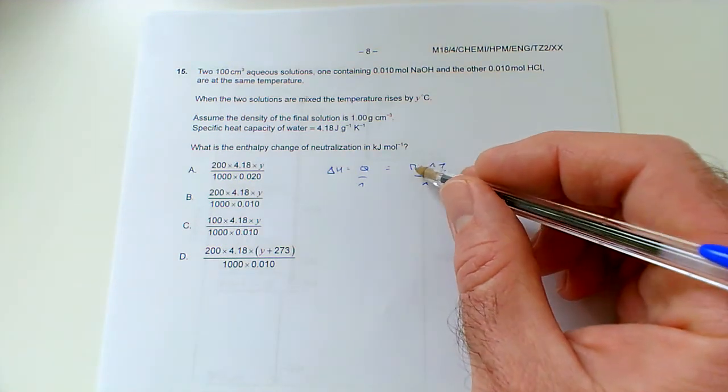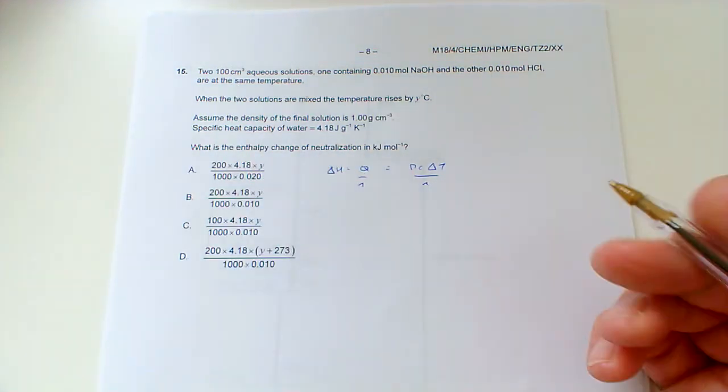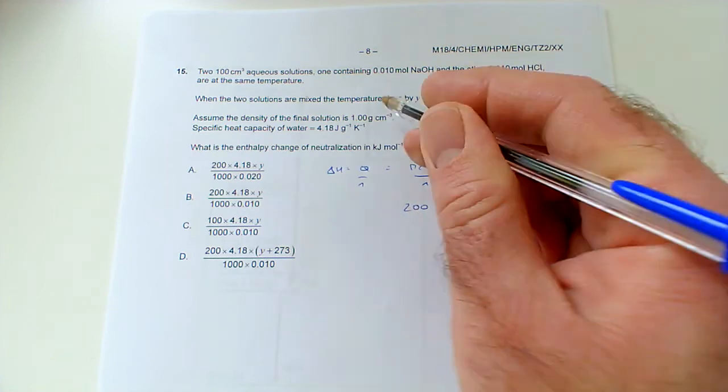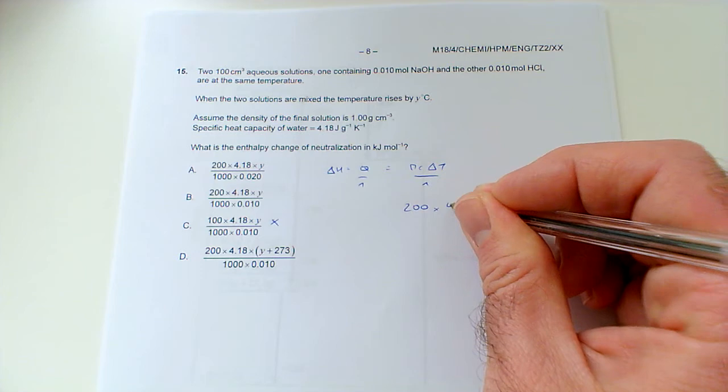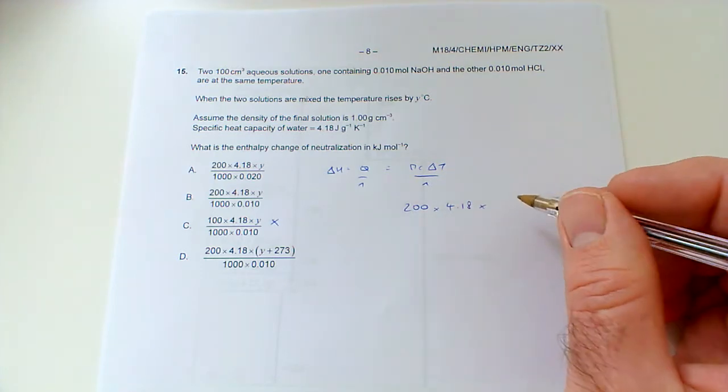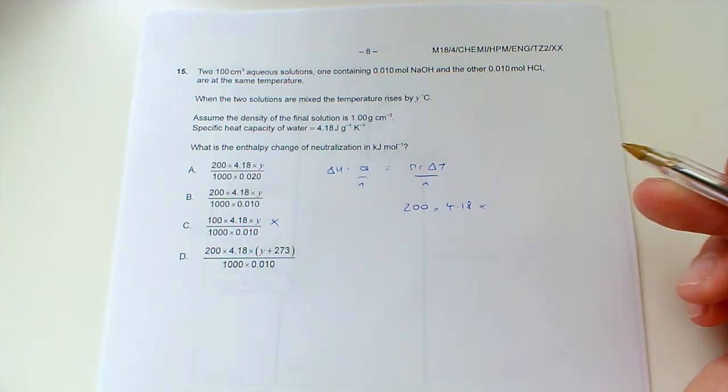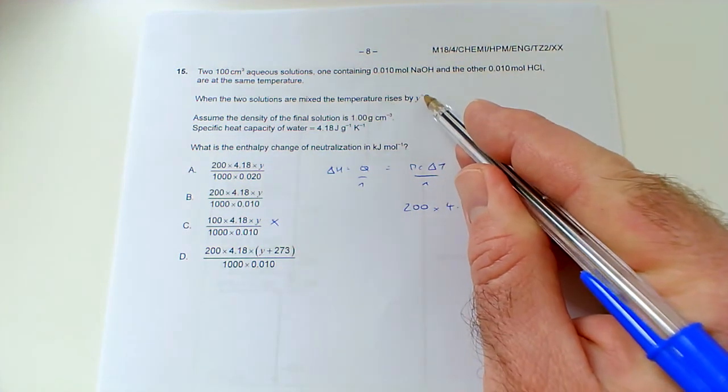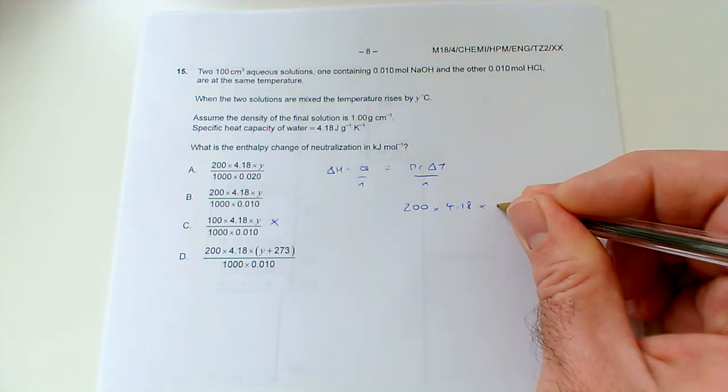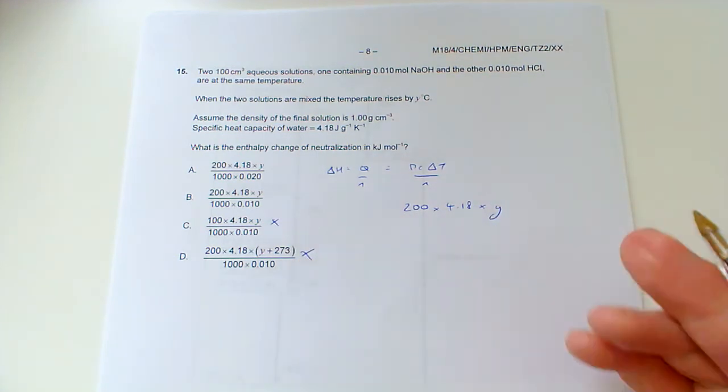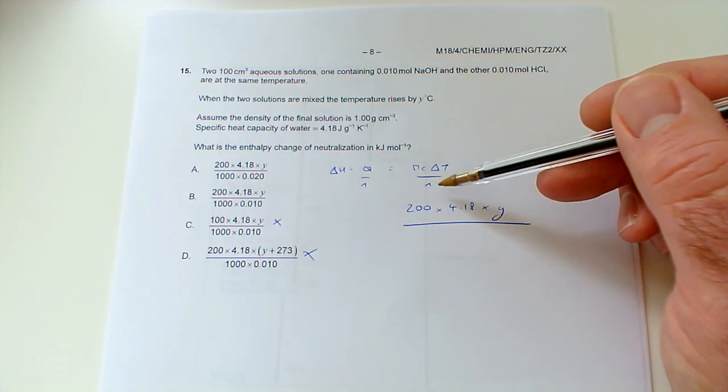If we substitute in our values, the total mass of the solution - we've got two 100 cm³ solutions mixed together, so the total mass is going to be 200, assuming the density is one. So that rules out this one already. Then we've got to times by 4.18, which is the specific heat capacity, and then we've got to times that by the temperature rise, the temperature increase, which is y degrees C. It's already said the temperature rises by y, so that's a temperature change that would be the same in degrees C or kelvin. We just need to times it by y, we don't need to bother adding 273 because it's a temperature change.